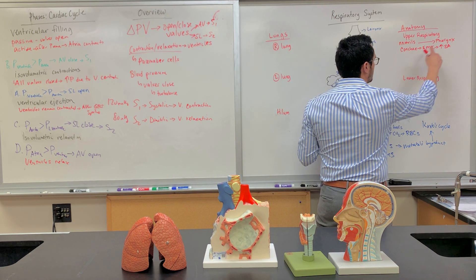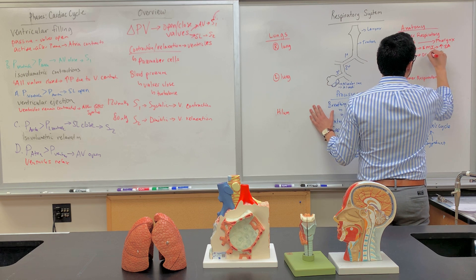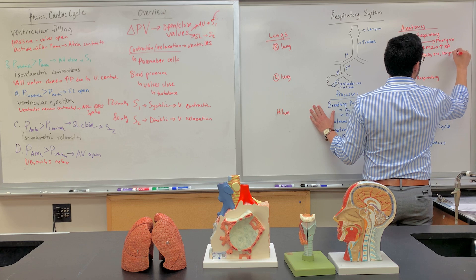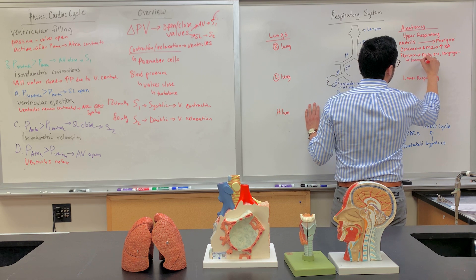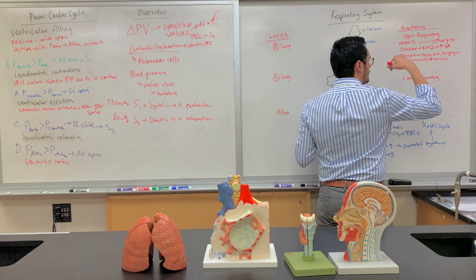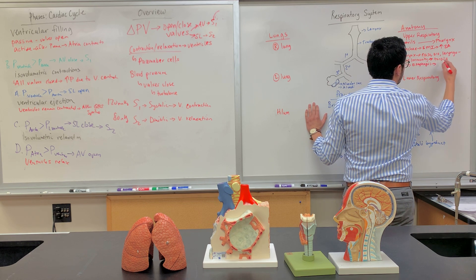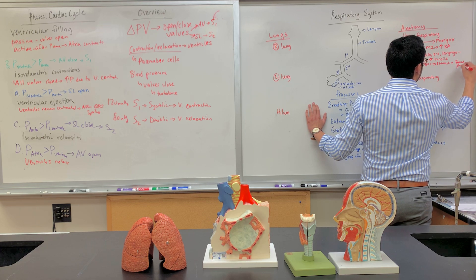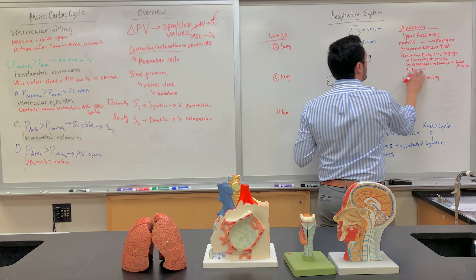The pharynx has a few different regions: the nasopharynx, the oropharynx, and the laryngopharynx. Within the pharynx you have the immunity component, which is the tonsils. The laryngopharynx leads to the esophagus, and from the esophagus that's what gets into the stomach — so this is the food passageway. We also have to get air into the trachea, but that's part of the lower respiratory system.